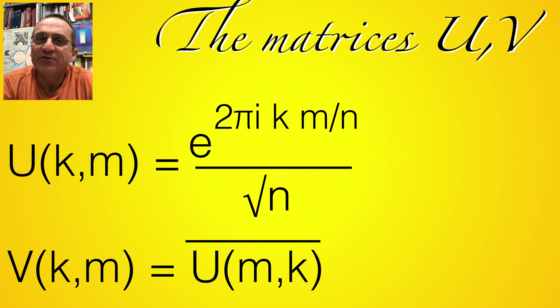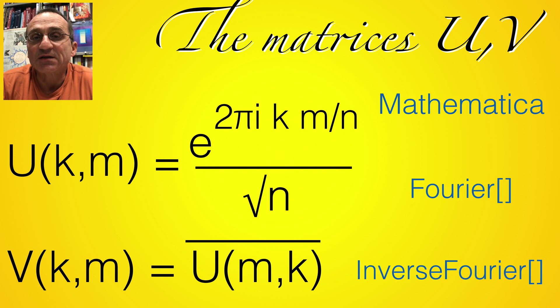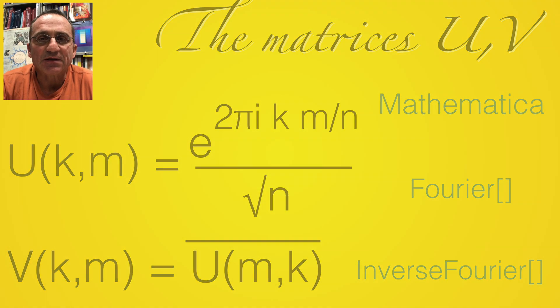So here are the explicit matrices, you can write them down, so these are the Fourier matrices for the discrete Fourier transform, it's a unitary matrix u, and the inverse is just obtained by taking the transpose and the conjugate, the inverse Fourier transform. In Mathematica this is implemented like Fourier or inverse Fourier already built in.